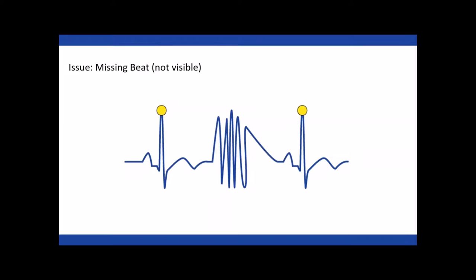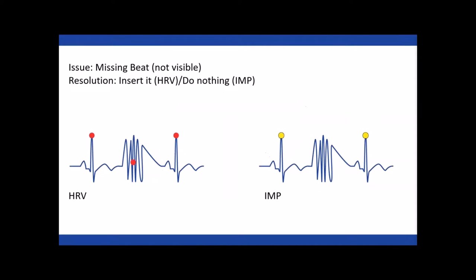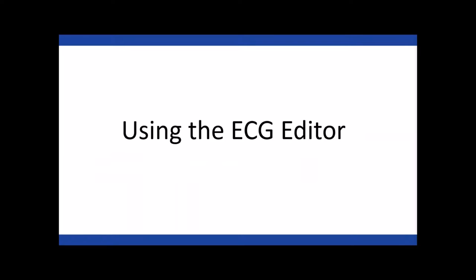Then there's the case where there's a missing beat and you can't tell where the R peak should be because noise has corrupted the signal. In HRV, because we need that 30-second contiguous section of R peaks, we have to guess where the R peak would be using a tool called mid-beating. For impedance, since we only want quality cycles within a segment, we would just leave it, because placing a point there would corrupt our ensemble. With that, I'll launch the HRV application.